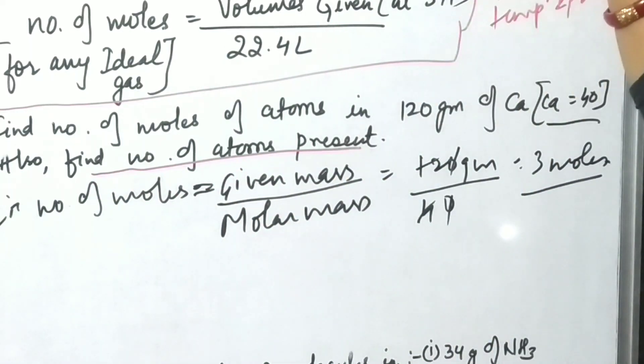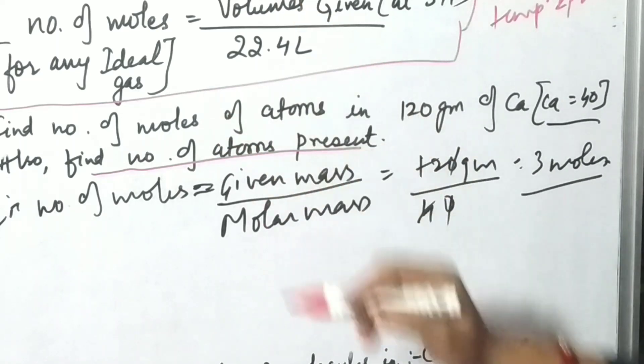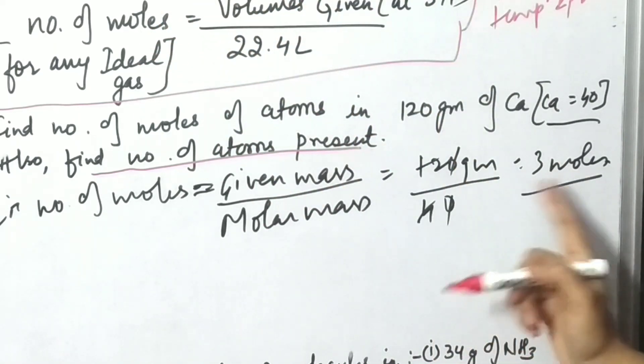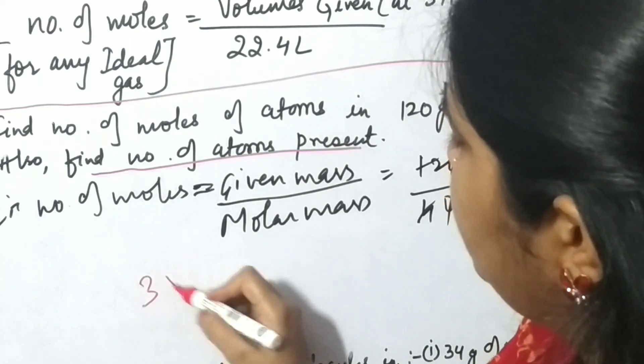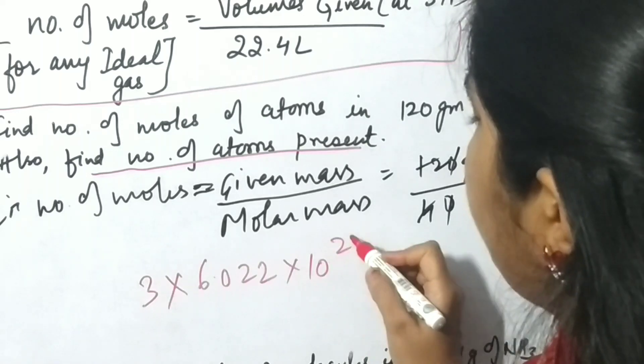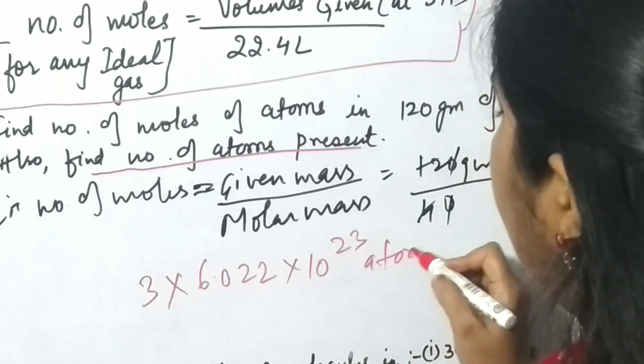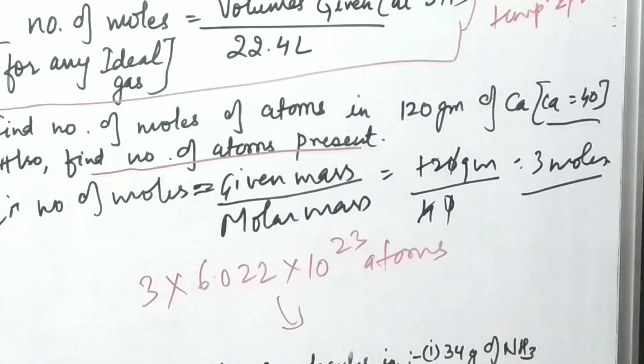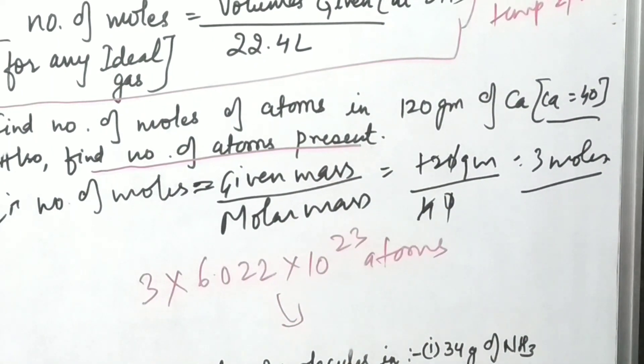So if one mole contains this many atoms, then 3 moles will contain 3 × 6.022 × 10²³ atoms. You can multiply these values and write the answer. I hope you have understood this. Now moving on to the next question. Question number two: Find out number of moles of molecules in 34 gram of ammonia.